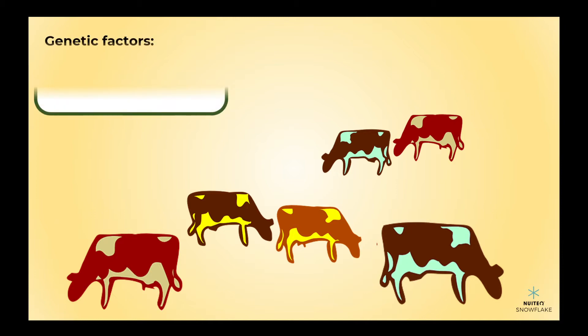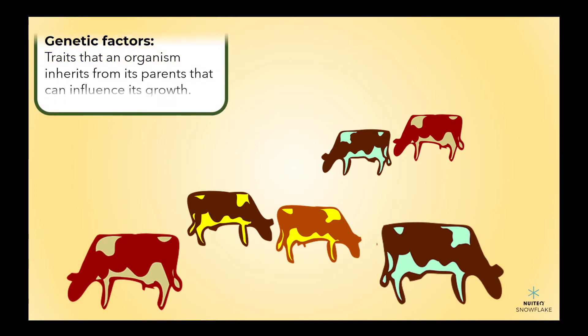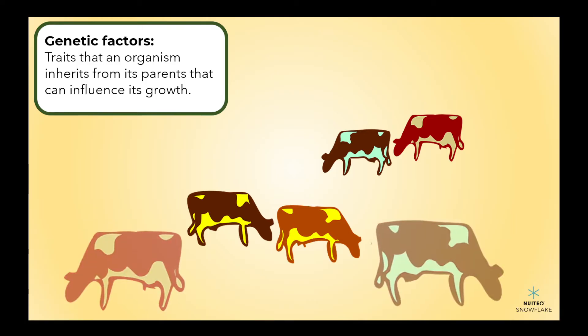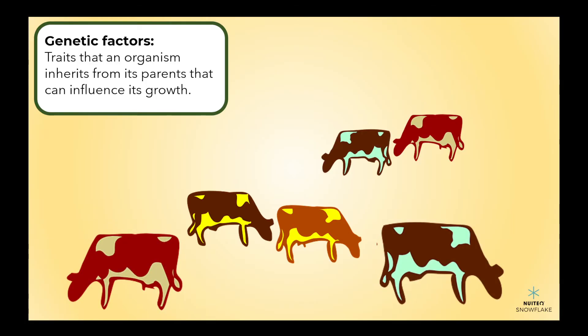Genetic factors, on the other hand, are traits that an organism inherits from its parents that can influence its growth. For example, large breed cattle will naturally grow bigger than small breed cattle due to their genetics.